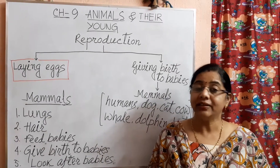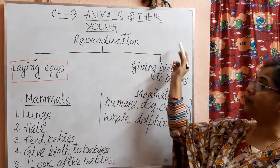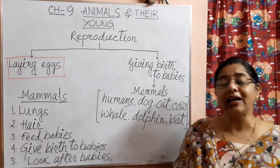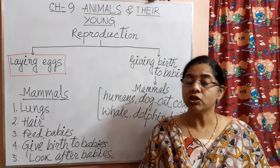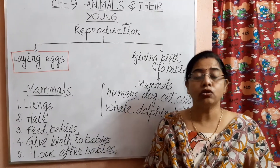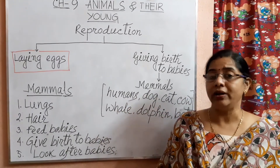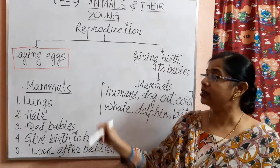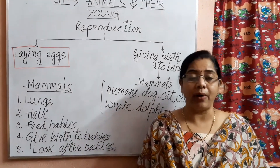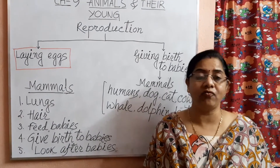Hello students, this is our third class on the chapter Animals and Their Young. In our last two classes, we discussed about reproduction and the two main ways of reproduction. The first one we discussed is by laying eggs. We discussed about the life cycle of a hen, a frog, and a butterfly.